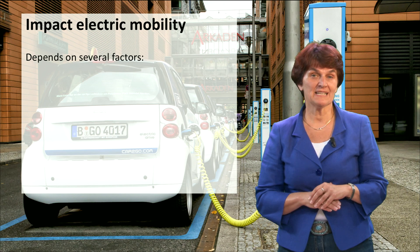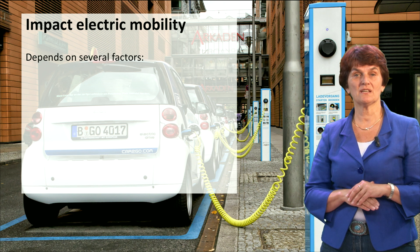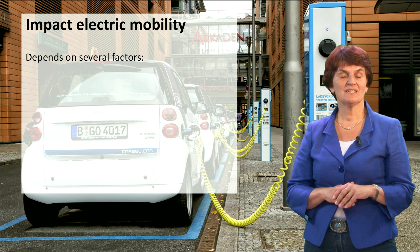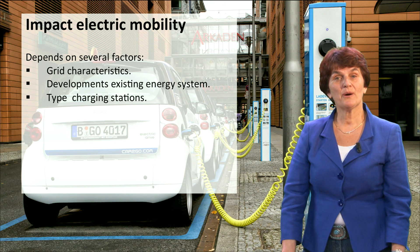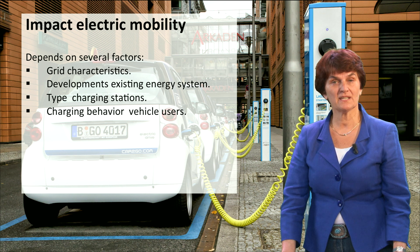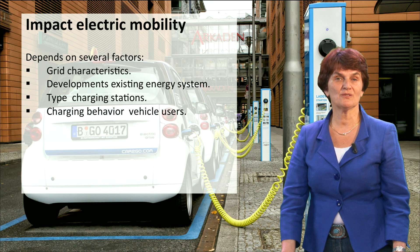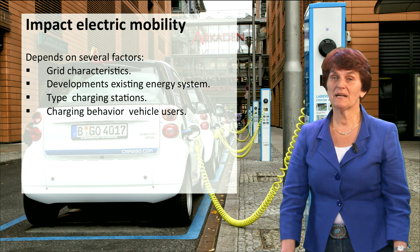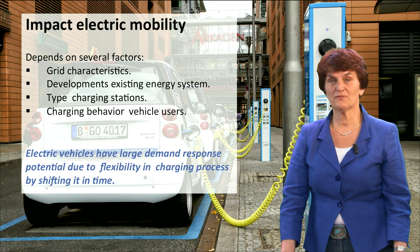As already said, the impact of electric mobility on the grid and the electricity demand will heavily depend upon the time and duration at which consumers charge their vehicles. To sum up, the impact depends on several factors, namely grid characteristics, developments in the existing energy systems, type of charging station, and charging behavior of vehicle users. All these aspects can make it difficult for network operators to anticipate electric mobility, but they need to do this by identifying critical grid components and deciding an appropriate location for charging stations. The demand-response potential of electric vehicles is large due to the flexibility in the charging process by shifting it in time.